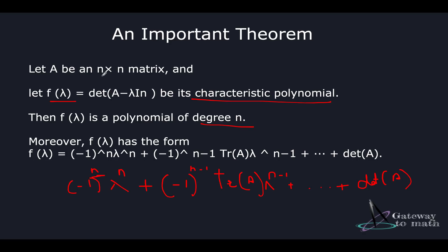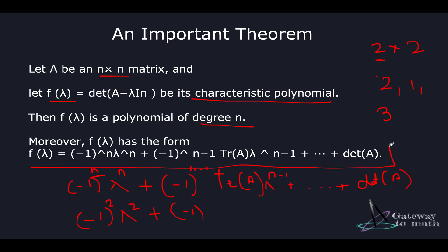To apply this theorem: if it's a 2×2 matrix, n = 2, so the leading term is (−1)² · λ² = λ². Then (−1)^(n−1) · tr(A) · λ^(n−1) gives the next term, and finally we add det(A). If it were a 3×3 matrix, the expression would extend accordingly until it reaches the determinant term. This is a useful representation for expressing the characteristic polynomial without computing every entry.